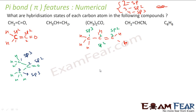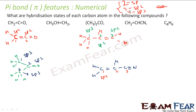Let's draw CH2=CH-C≡N. Number the carbons as 1 and 2, with nitrogen at the end. Carbon 1 is linked to 3 atoms, so it is Sp2. Carbon 2 is also linked to 3 atoms, so it is Sp2. The third carbon is linked to 1 nitrogen and 1 carbon — that is 2 atoms — so it is Sp.